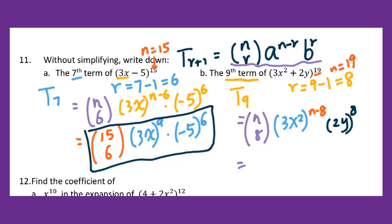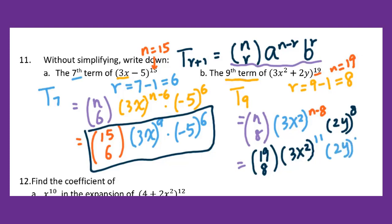Therefore, we plug in 19 taken 8. Then 3x squared to the 11th power — since 19 minus 8 is 11 — then 2y to the 8th power. That's all, because you don't have to simplify.